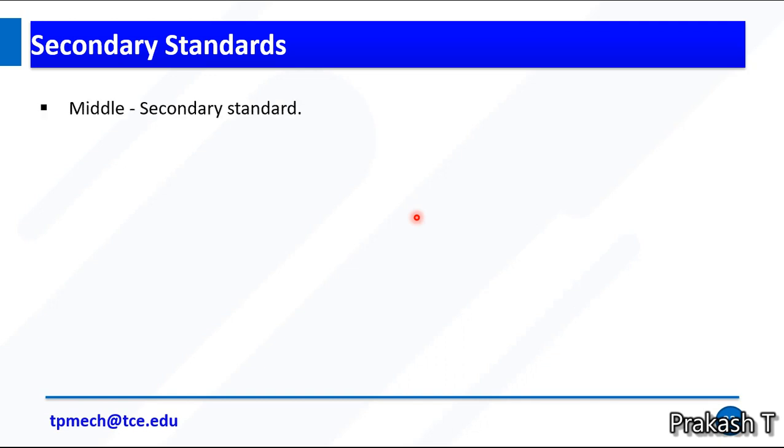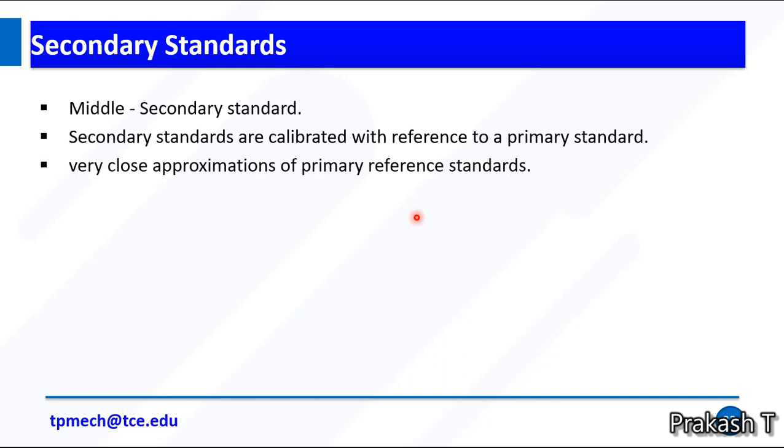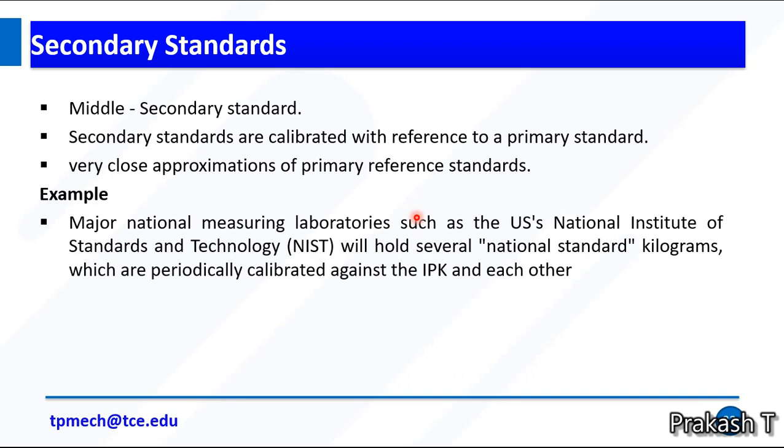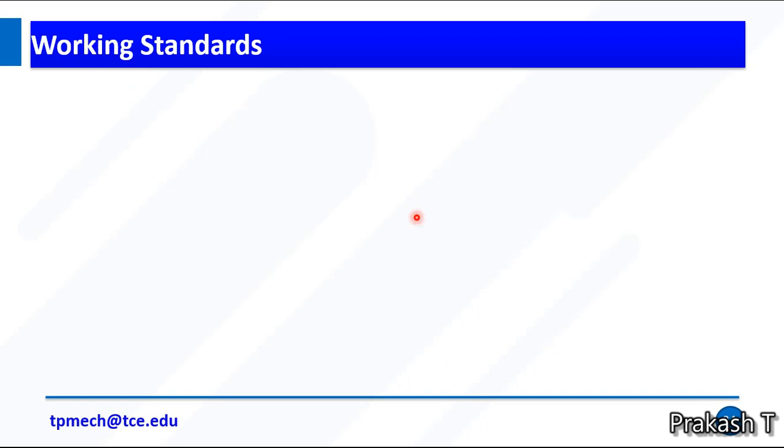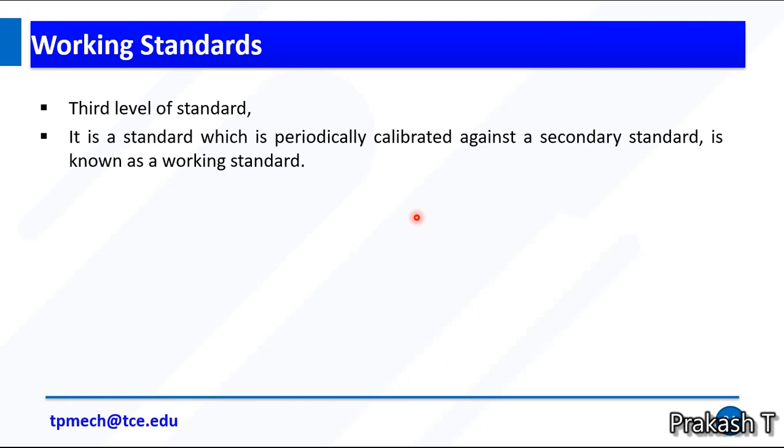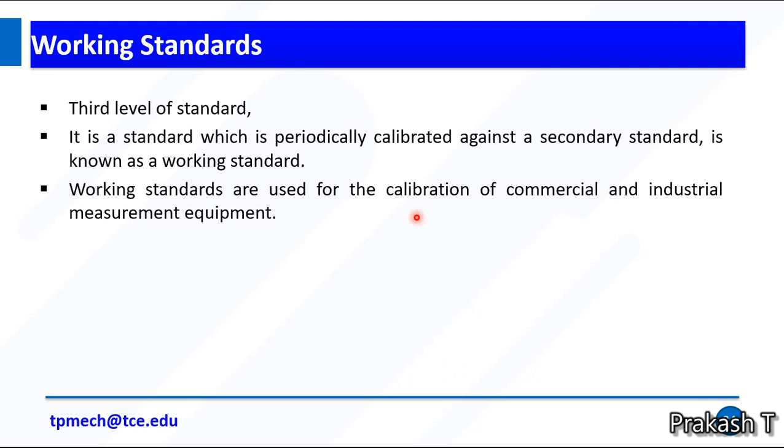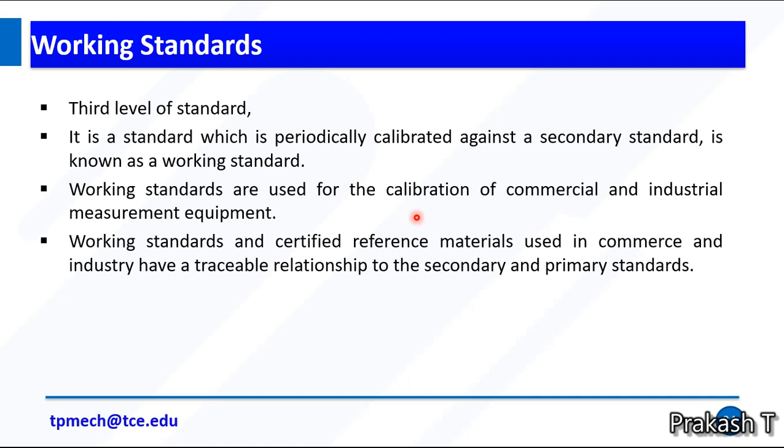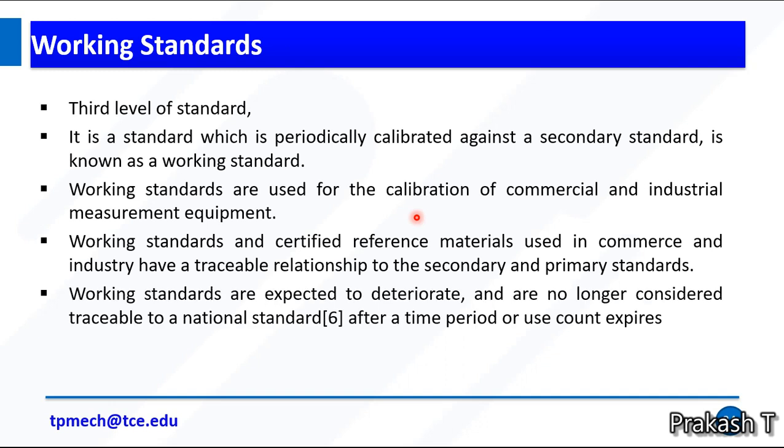The second standard is secondary standards, the middle of the tree. Secondary standards are calibrated with reference to the primary standard. They are very close approximations of the primary reference standard. Examples are major national measuring laboratories such as US National Institute of Standards and Technology, which hold several national standards that are periodically calibrated against the IPK and each other. The last standard is working standards, the third level. A standard which is periodically calibrated against the secondary standard is known as working standard. Working standards are used for the calibration of commercial and industrial measurement equipment. They are certified reference materials used in commerce and have traceable relationships to secondary and primary standards.